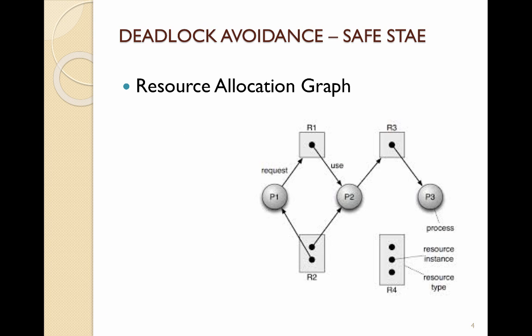One way to handle limited resources is to use a resource allocation graph, where processes make requests for resources and resources are allocated to processes. In this situation we have three processes P1, P2, P3 and four resources: resource 1, resource 2, resource 3, and resource 4. The dots inside each resource indicate how many instances of that resource exist.